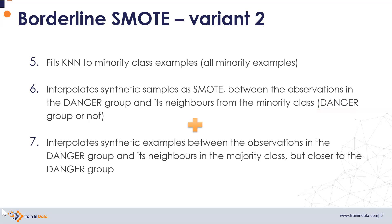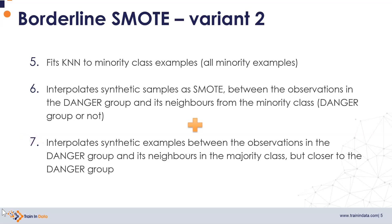The second variant makes a combination. It interpolates from the danger group to neighbors from the minority class, as in SMOTE and variant 1, but it also creates some synthetic data by interpolating from the minority class danger group to neighbors of the majority class. However, this interpolation is made with a shorter distance from the danger group observation, as we will see in the coming slides.